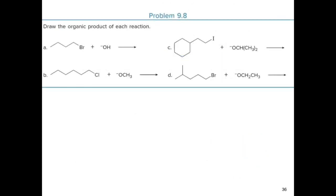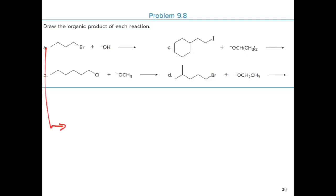Here's practice problem number eight: draw the organic product of each reaction. For the first one, we have a primary alkyl halide reacting with hydroxide ion, a strong nucleophile, so you would expect an alcohol to be synthesized. The hydroxide ion replaces the bromine atom via substitution reaction, yielding a primary alcohol with four carbon atoms.